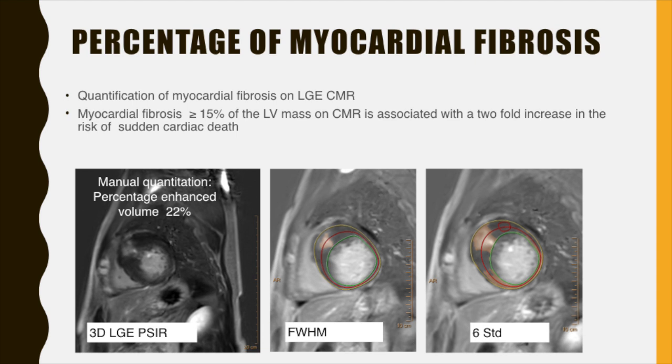Different methods can be employed to quantify myocardial fibrosis on CMR, such as manual contouring, 2, 3, 5, or 6 standard deviation techniques, or the full width at half maximum technique. However, quantification varies substantially with each of these techniques. For example, in one patient, manual quantification showed a calculated value of 22%; using 6 standard deviations, myocardial fibrosis was found to be 29%; using full width at half maximum technique, myocardial fibrosis was found to be only 5% in the same patient. The 6 standard deviation technique worked best in our case, and this is supported by studies reporting the 6 standard deviation technique as superior to other techniques for identifying fibrosis in HCM patients, although this has not been histopathologically validated yet.